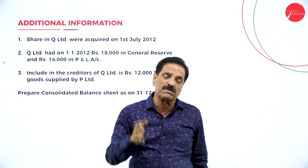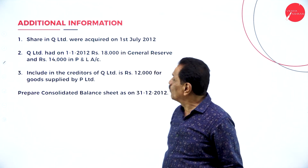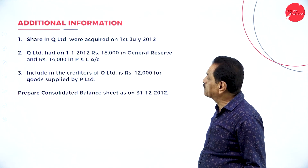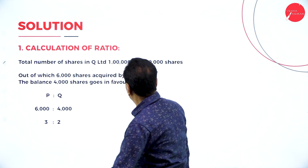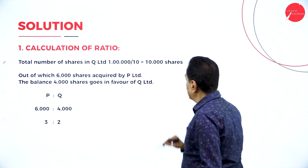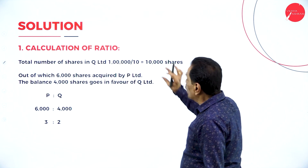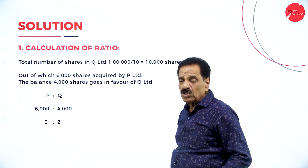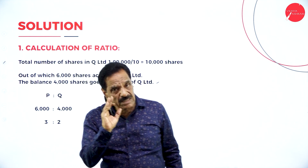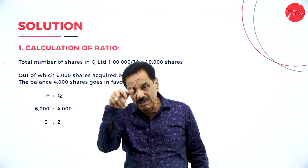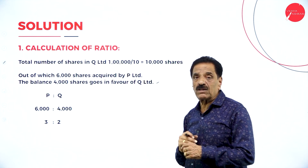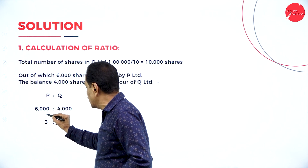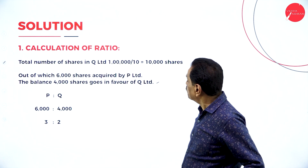Prepare the consolidated balance sheet. The balance sheet of the holding company and consolidated balance sheet are one and the same. Total number of shares in Q-Limited: 1,00,000 divided by 10 equals 10,000 shares. Out of these, 6,000 shares are acquired by P-Limited; the balance 4,000 shares go to the minority. So P to Q minority ratio is 6,000 to 4,000, which is 3 to 2.